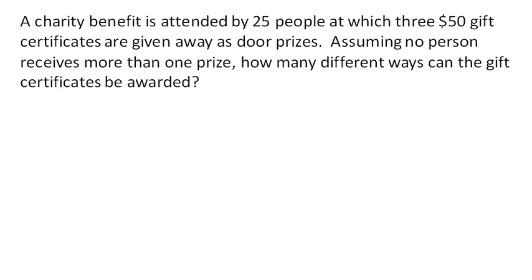Notice that all three prizes are the same here. So we could go with the basic idea of saying we have three people, there are 25 possibilities for the first prize, 24 for the second, and 23 for the third. Or in other words, there are 13,800 different ways that we could pick three people from our crowd.